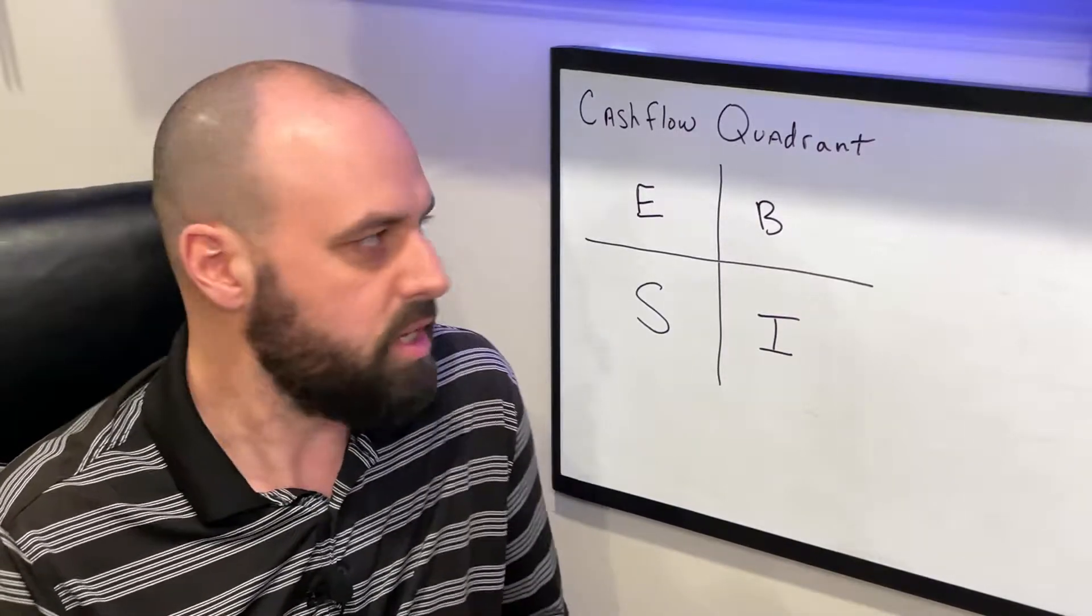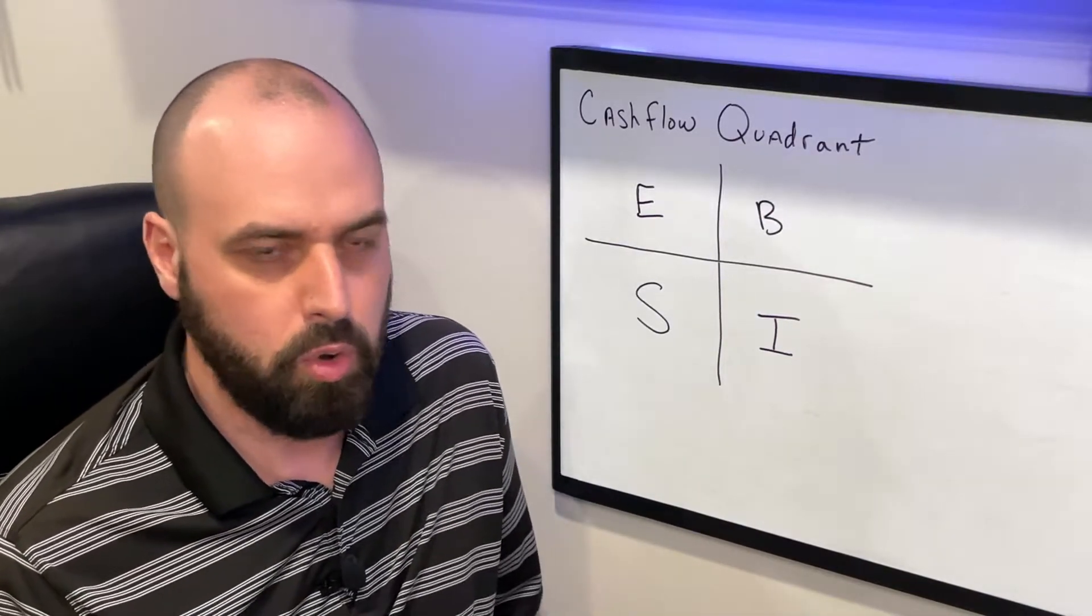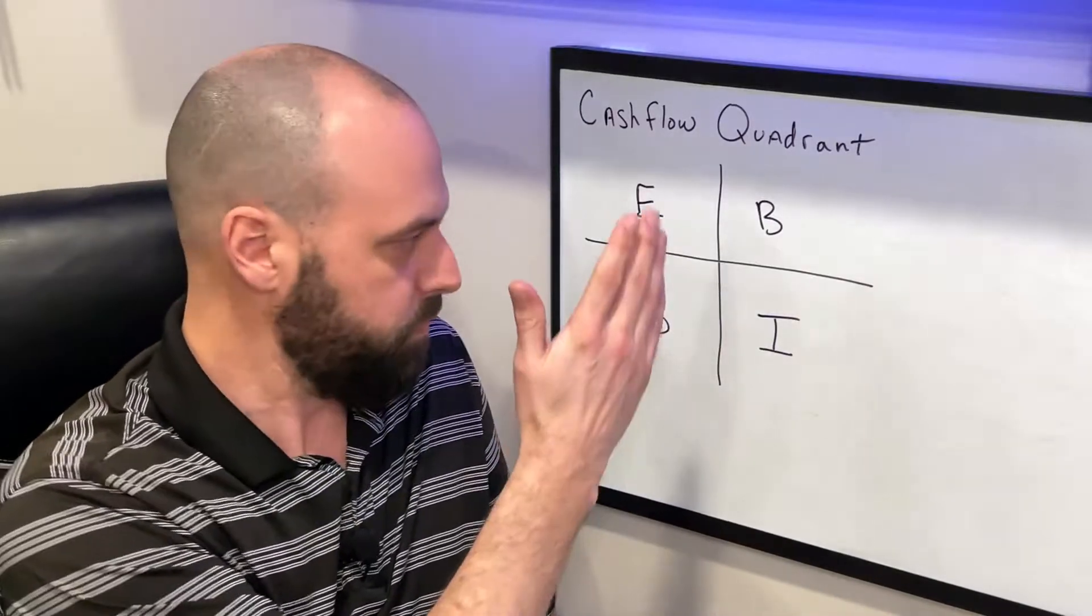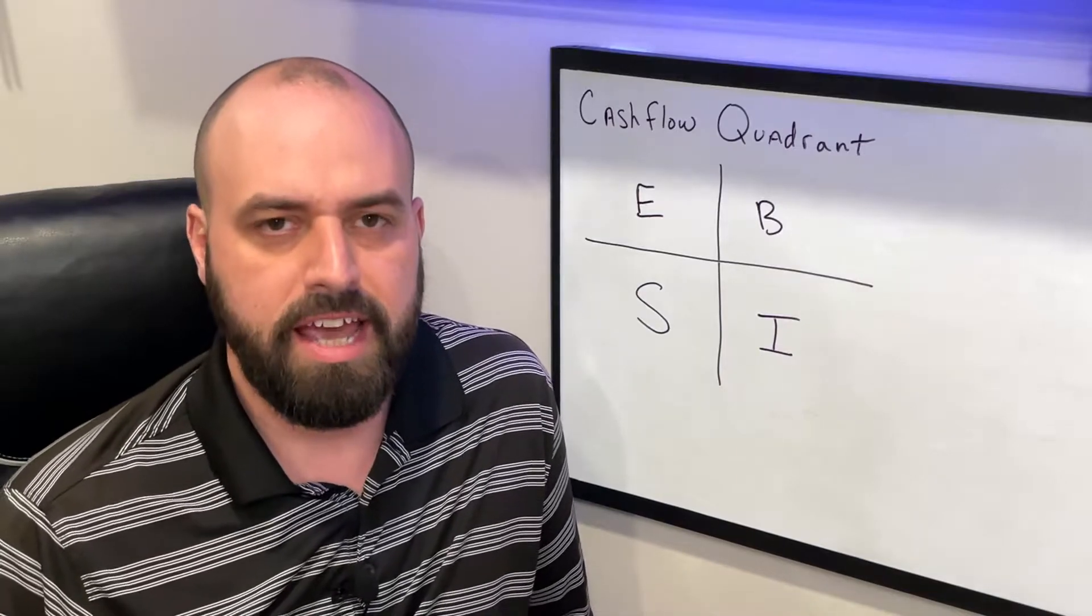The next step is moving over to the right side of the quadrant. This is a big deal. What the goal is in life and in business is to move from the left side of this quadrant over to the right side, and that's where you got your big businesses and you have your investors.